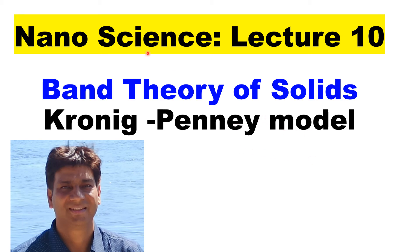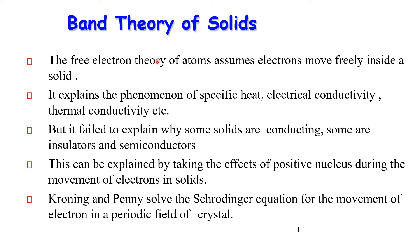In this video, I will discuss how energy bands originate in solids, as given by the Kronig-Penney model. The free electron theory assumes electrons move freely inside a solid, which explains specific heat, conductivity, and thermal conductivity, but it failed to explain why some solids are conducting, some are insulators, and some are semiconductors. This can be explained by taking into account the effect of the positive nucleus during the movement of electrons in the solid.